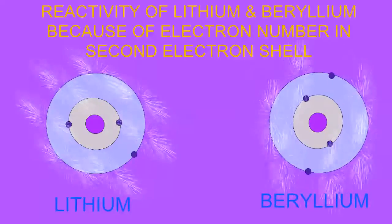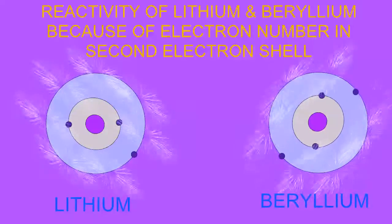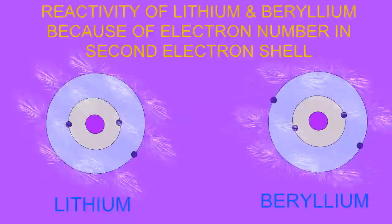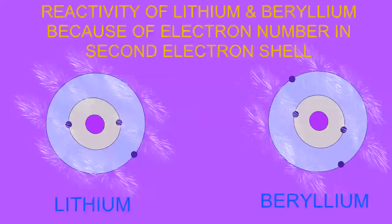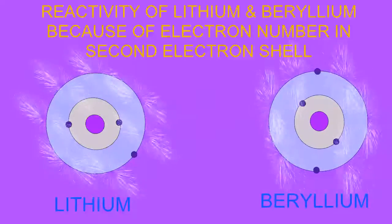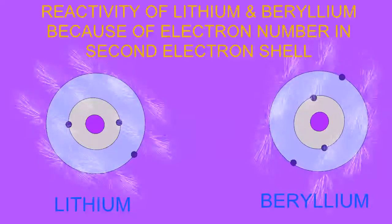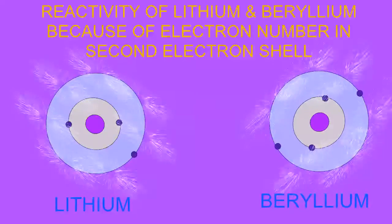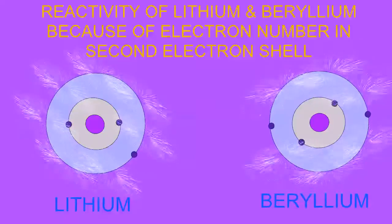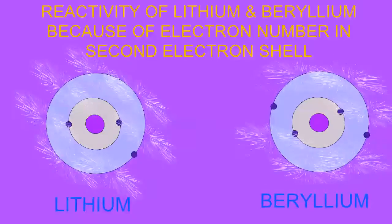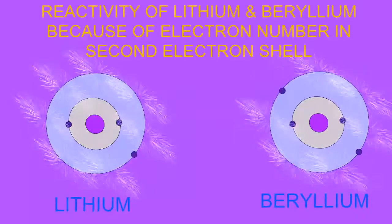So beryllium can donate two electrons and be an electron donor, which then becomes a positive ion with a 2+ charge.